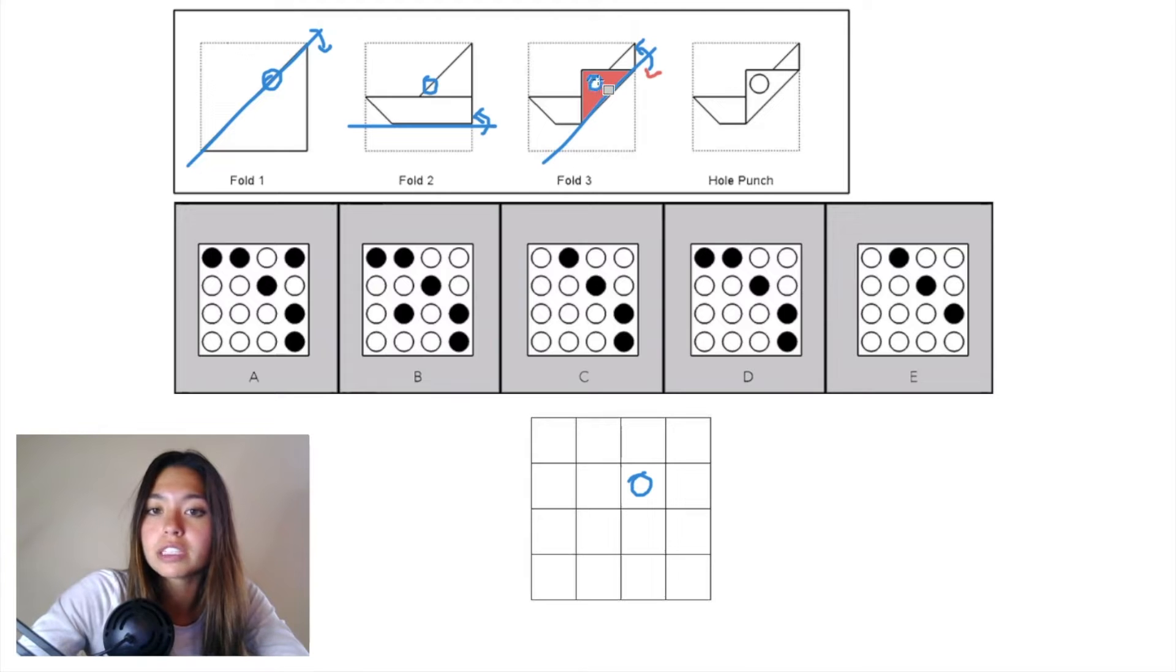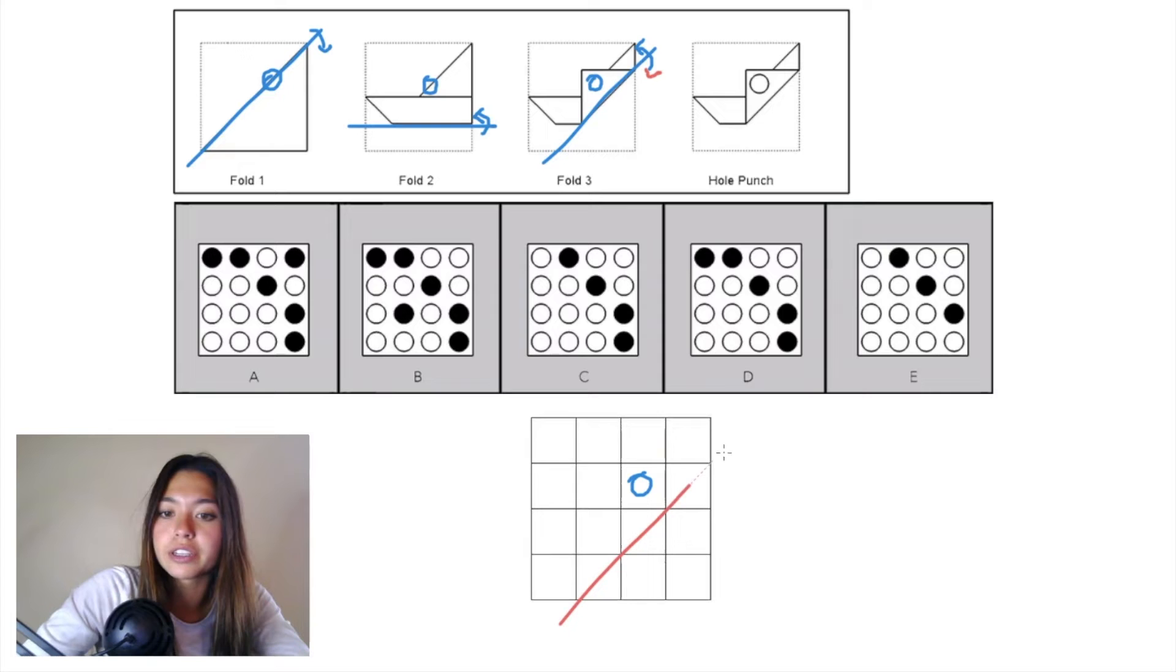it needs to be reflected back down over that diagonal plane. If we draw that same diagonal plane in our grid, this blue hole punch will be reflected over that line to end up here.